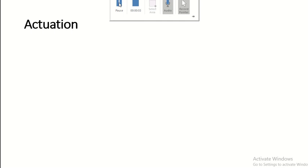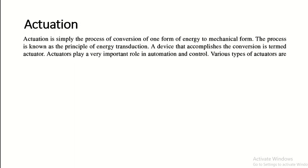In today's lecture we will discuss about the actuation process. Actuation is simply the process of conversion of one form of energy to mechanical form. Before this actuation process, we discussed sensing. In a mechatronic system, there is a control block, then a sensor, then a processing unit, and afterward an actuator. The sensor provides a signal to the controller or processor and based upon the control algorithm it provides a decision to the actuator, which receives an electrical signal and produces mechanical motion.